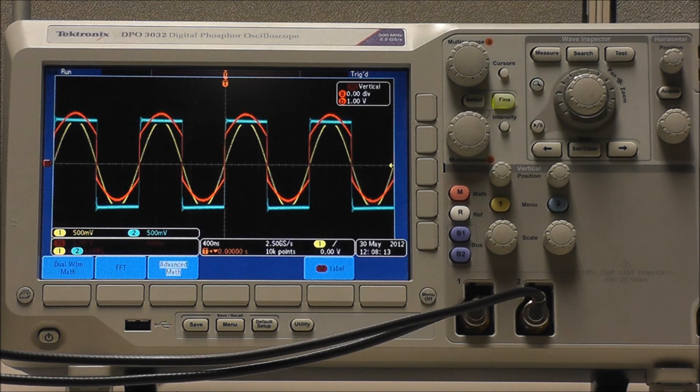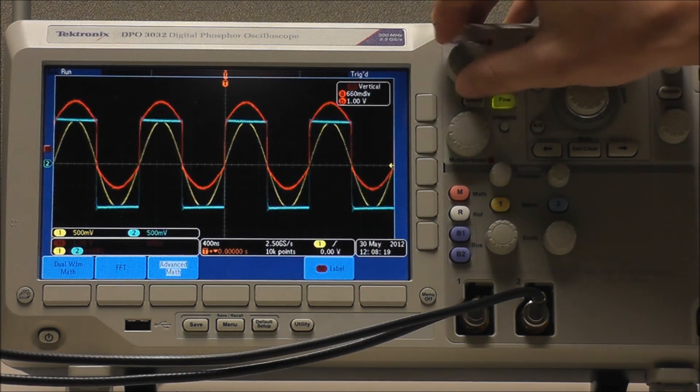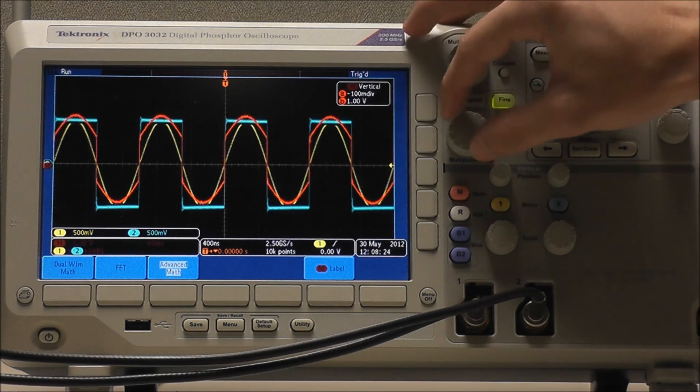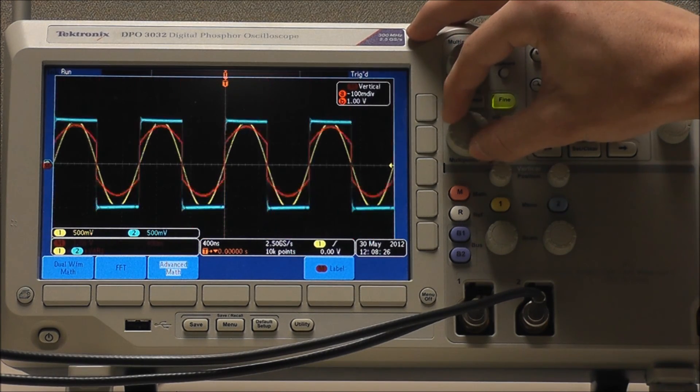One last feature, just like our channels, we can also manipulate the vertical components of our math waveform. Using multipurpose A to adjust vertical position, and multipurpose B to adjust vertical scale.